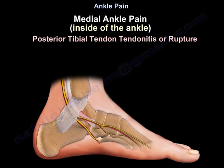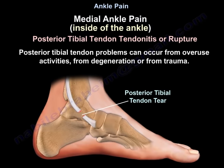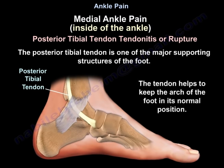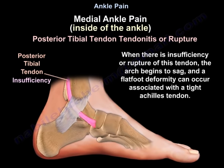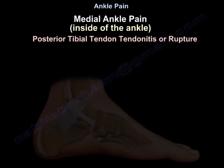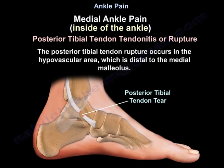Posterior tibial tendonitis or rupture can occur from overuse activities, degeneration, or trauma. The posterior tibial tendon is one of the major supporting structures of the foot, helping to keep the arch in its normal position. When there is insufficiency or rupture of this tendon, the arch begins to sag and a flat foot deformity can occur, associated with a tight Achilles tendon. The rupture typically occurs in the hypovascular area distal to the medial malleolus.